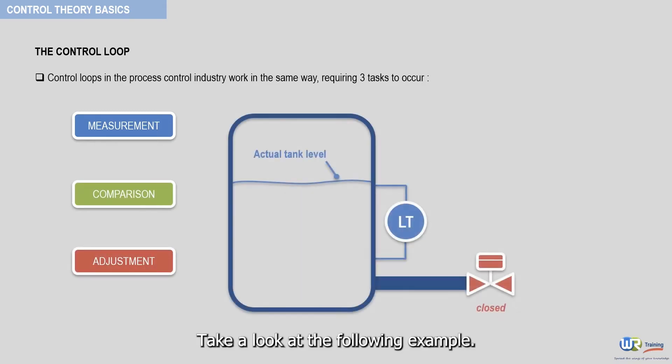Take a look at the following example. Here, a level transmitter measures the level in the tank and transmits a signal associated with the level reading to a controller.